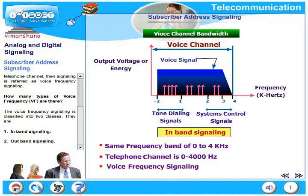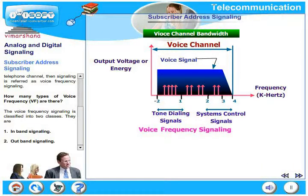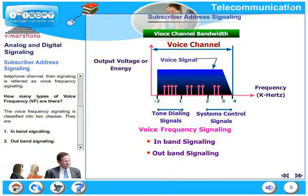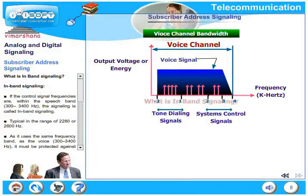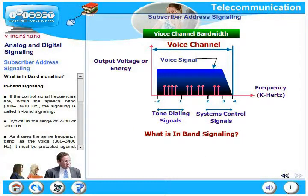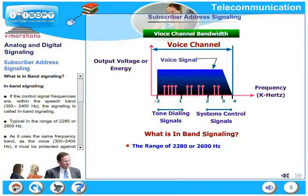Voice frequency signaling is classified into two classes: in-band signaling and out-of-band signaling. In in-band signaling, the control frequencies are within the speech band, typically in the range of 2280 or 2600 hertz.